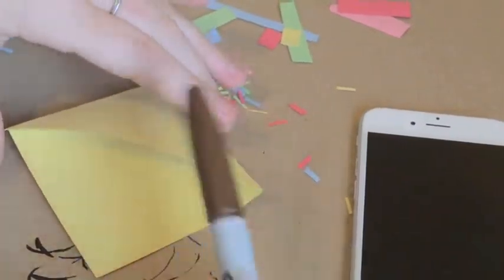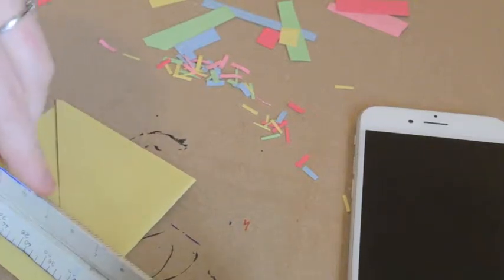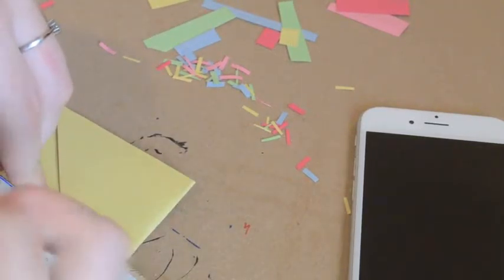Next I'm taking out a brown marker and my ruler, and I'm going to start drawing lines on the ice cream cone to act as the ridges on the cone.